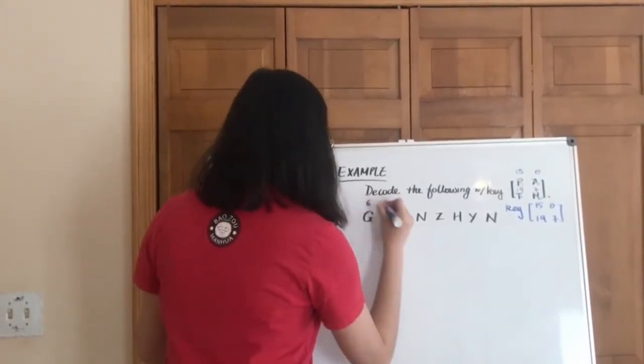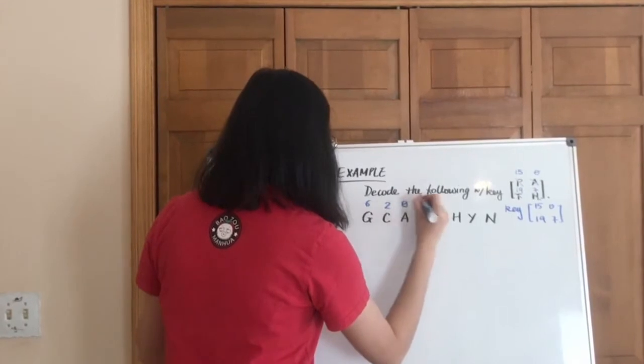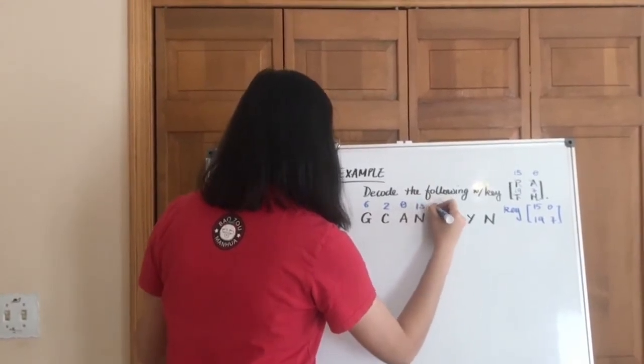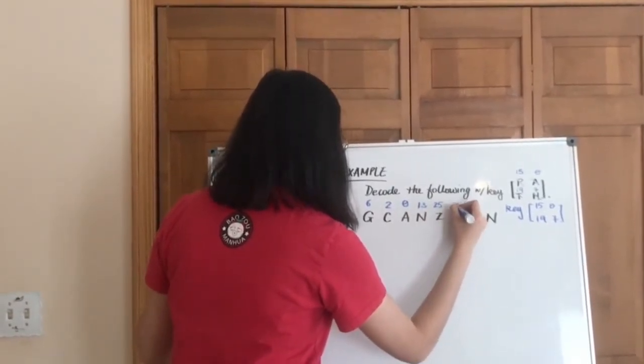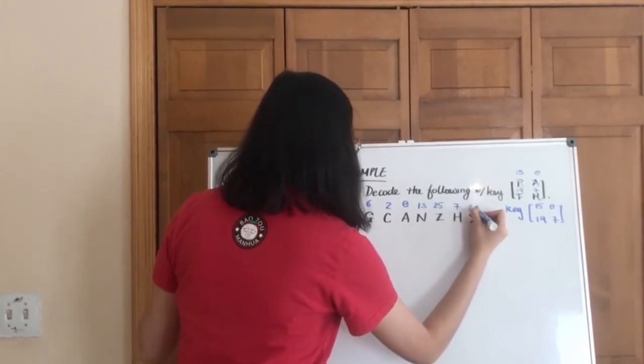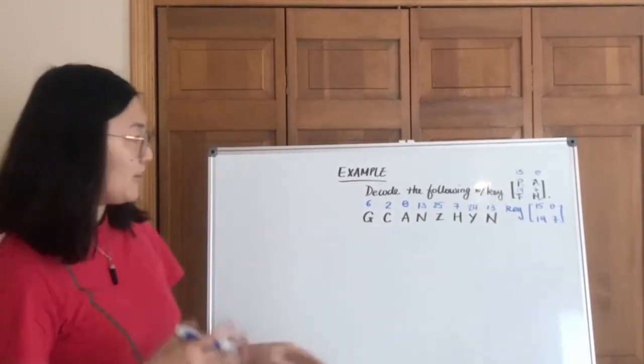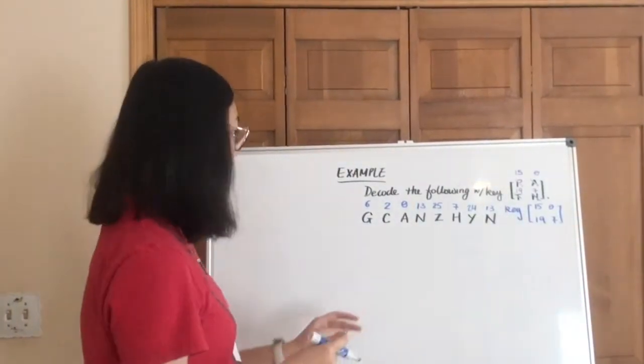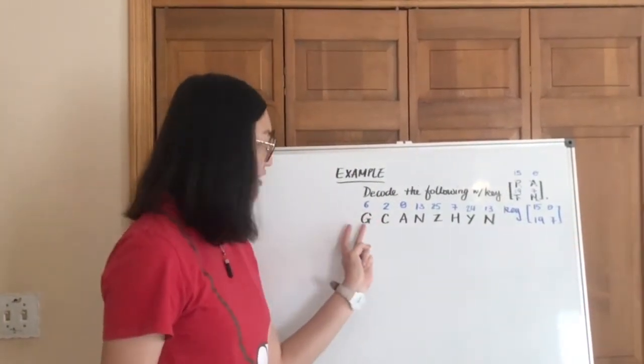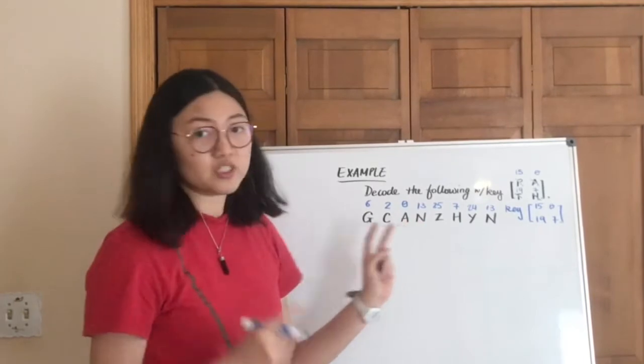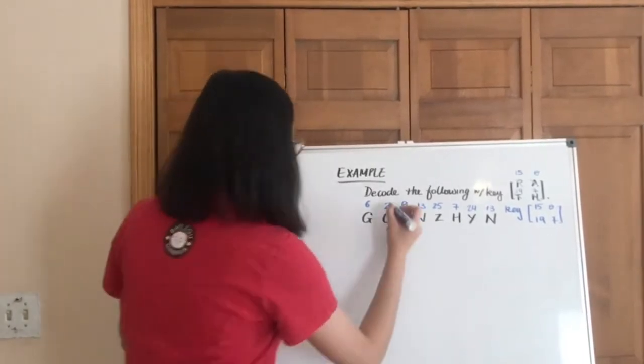And put these also into numbers, 25, 7, 24, 13. Okay, because this is going to be a 2x2 matrix, we're going to want to group these letters into numbers of 2 for the decode process.